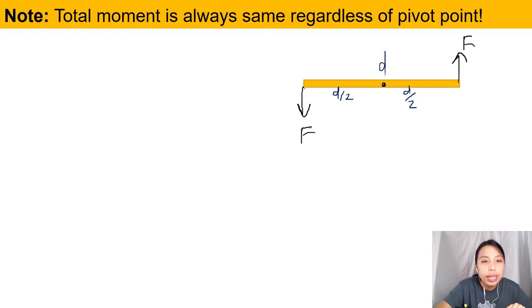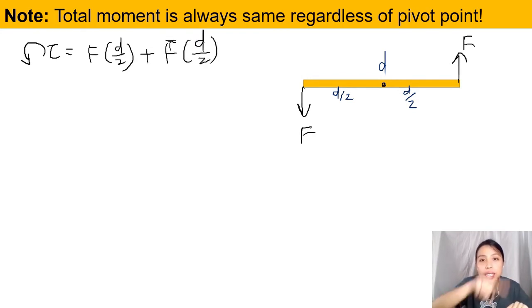So if you look at anticlockwise torque, that will be force times D over 2, plus another one, the couple, the other couple, times D over 2. Both are also pushing it anticlockwise. So then if you add together, you will get F times D. So it's a shortcut. All you need to do is one of the forces times the distance between these two couples. Now, you can only use this for couples. Only for couples.